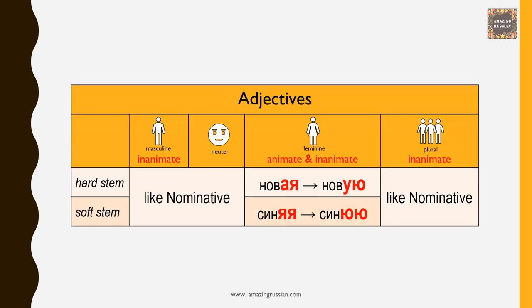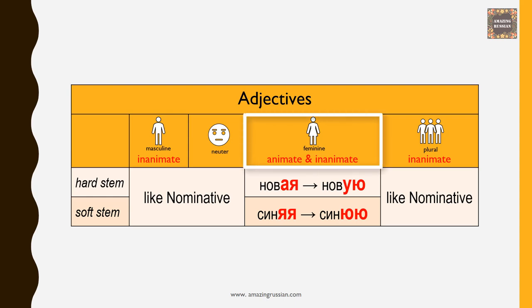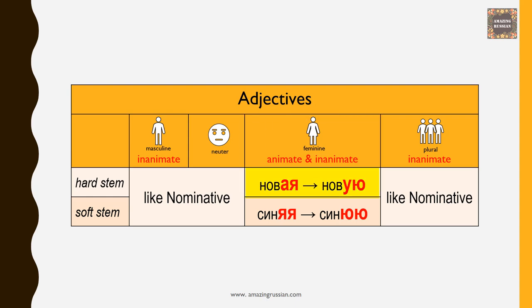Adjective endings: only feminine adjectives change. Hard stem АЯ becomes УЮ — новая → новую. Soft stem ЯЯ changes into ЮЮ — синяя → синюю.